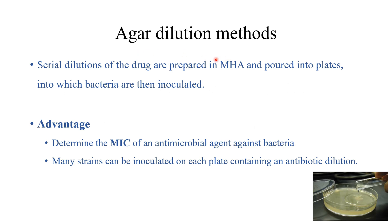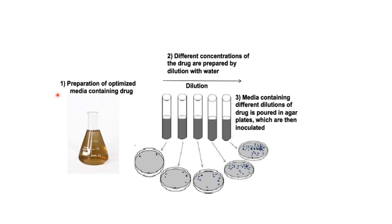In agar dilution methods, serial dilutions of drugs are prepared in Mueller Hinton agar and poured into plates into which bacteria are inoculated. An advantage is that it can determine the MIC — that is, minimum inhibitory concentration — of an antimicrobial agent against bacteria. Many strains can be inoculated on each plate containing the antibiotic dilution.